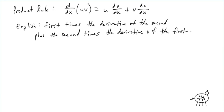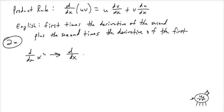So that's exactly what the product rule says. Let's try this on x squared. If I do d/dx of x squared, we already know it's 2x. But let's break it up and do d/dx of x times x, just to show that it works.